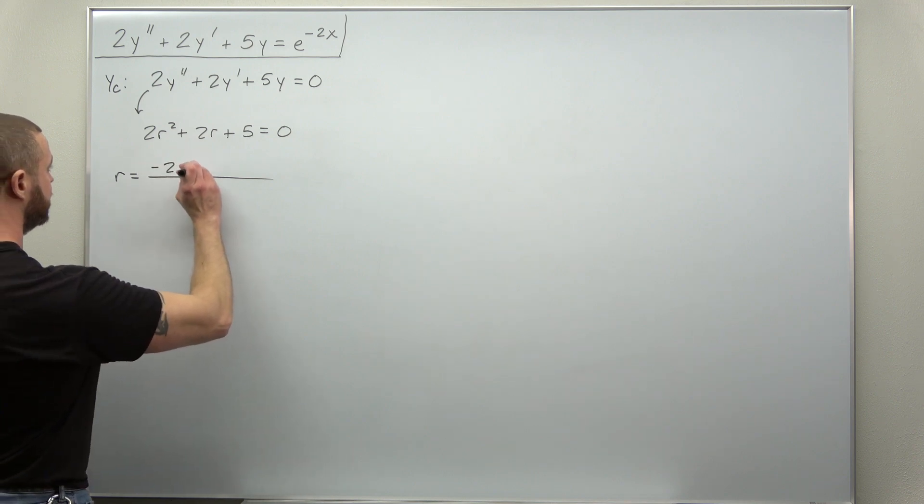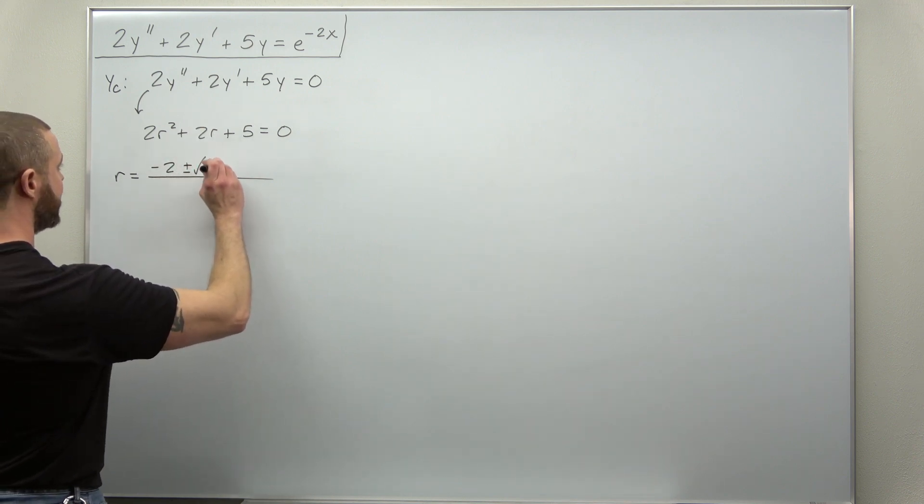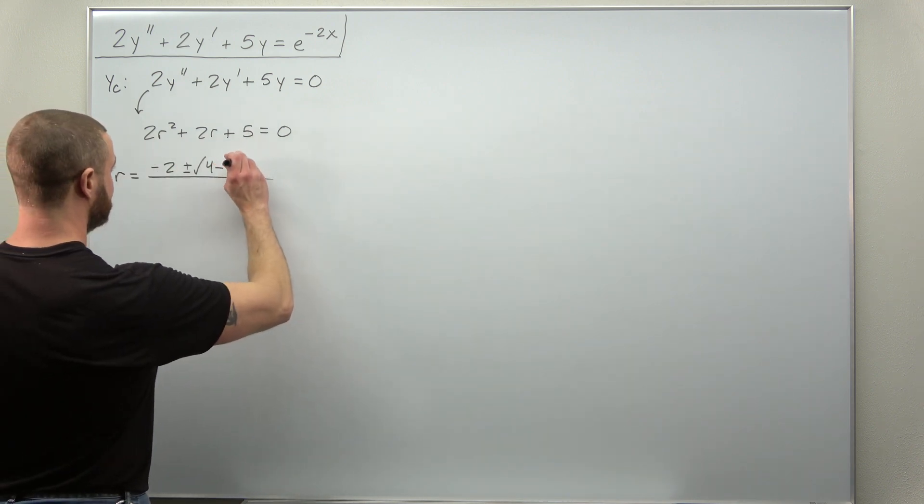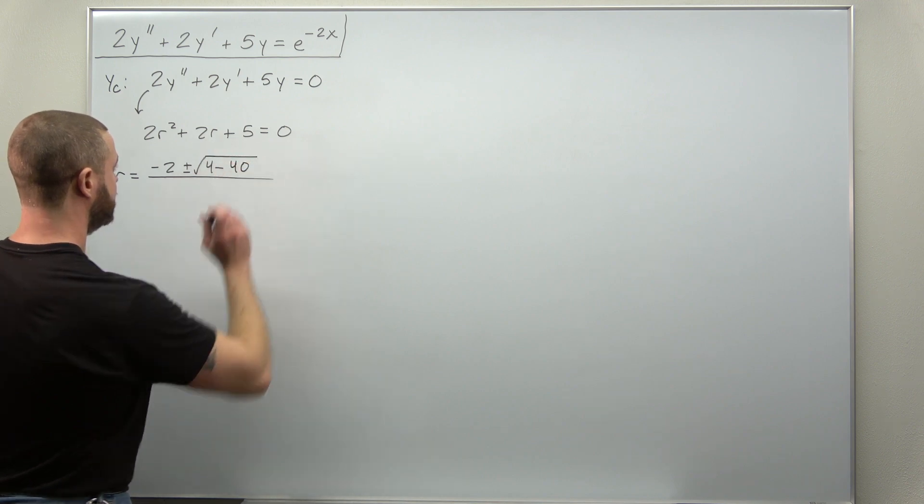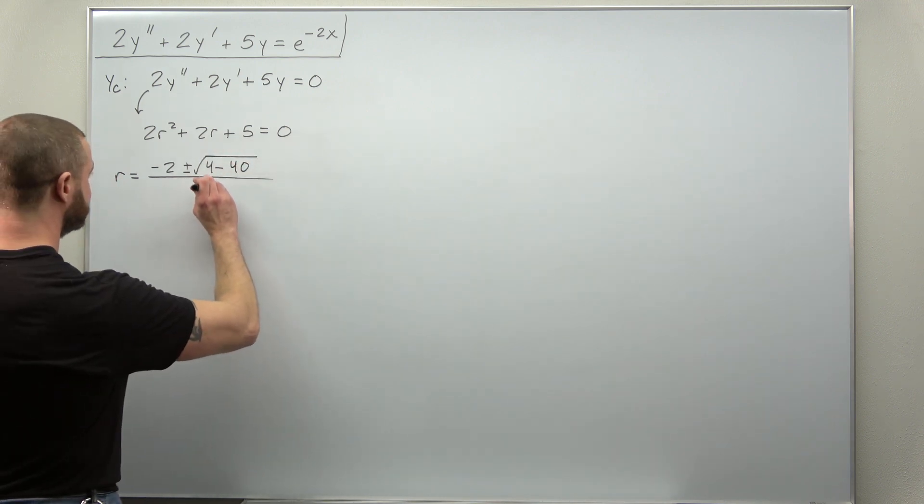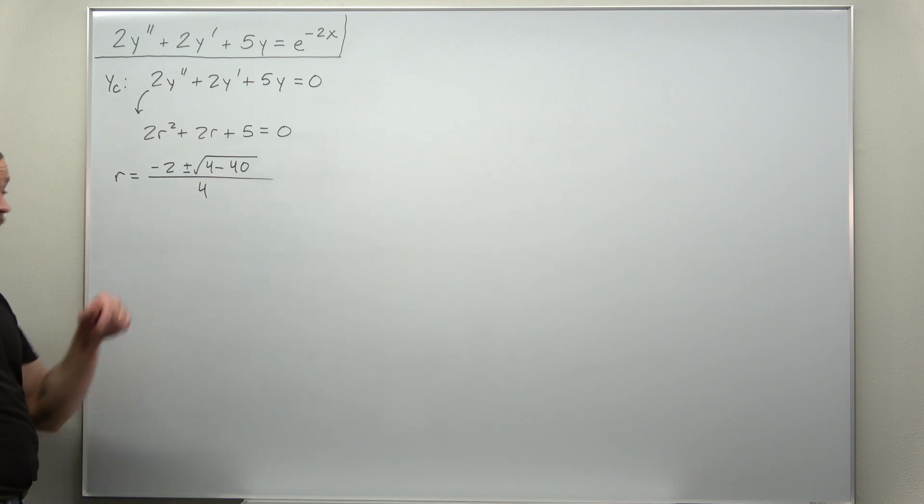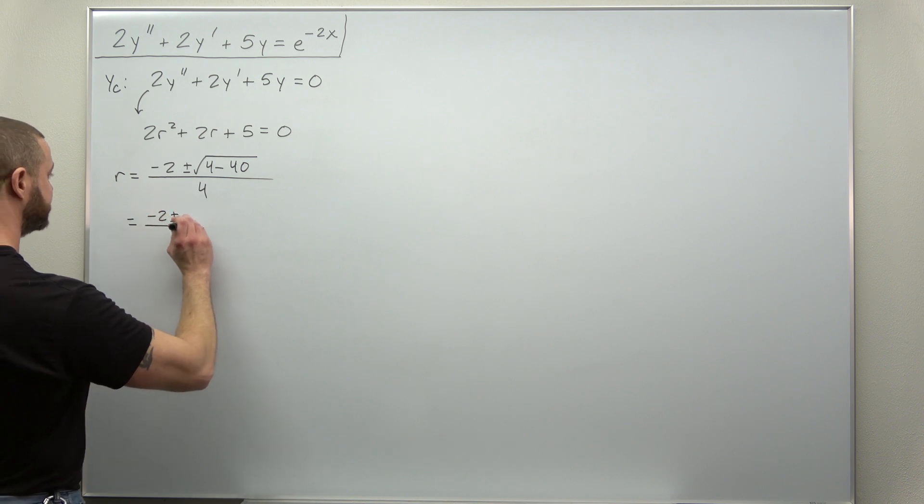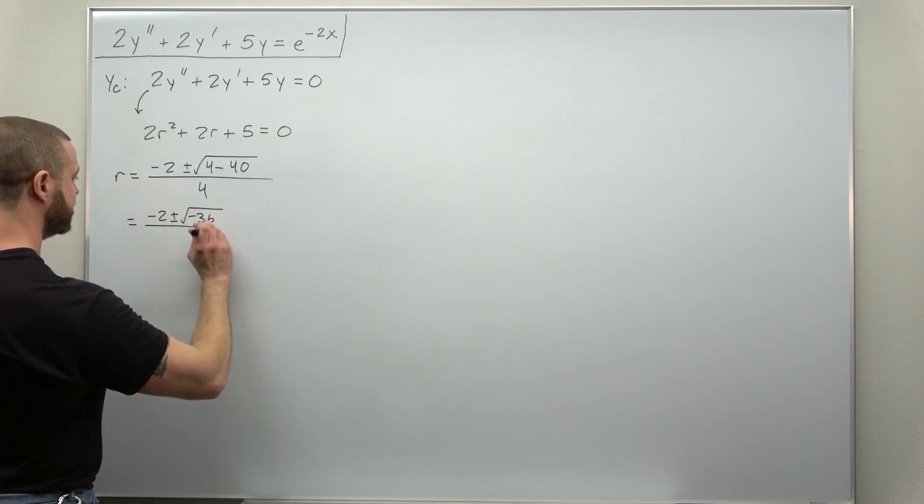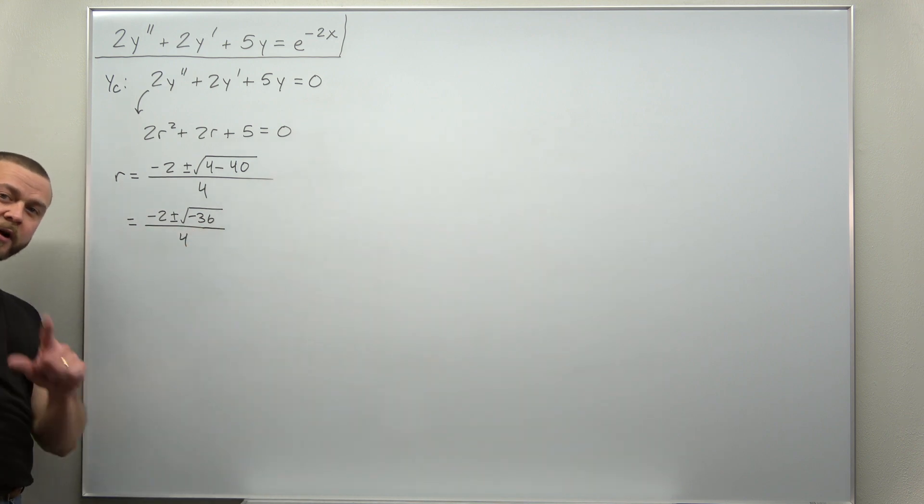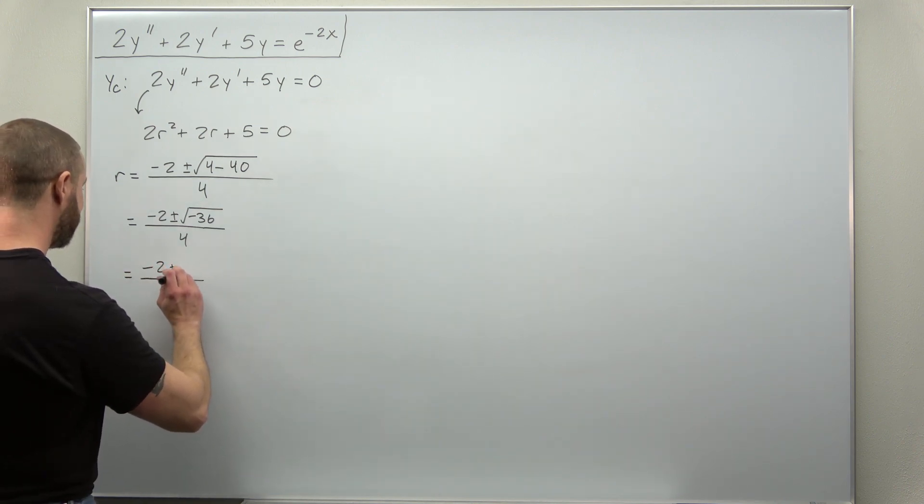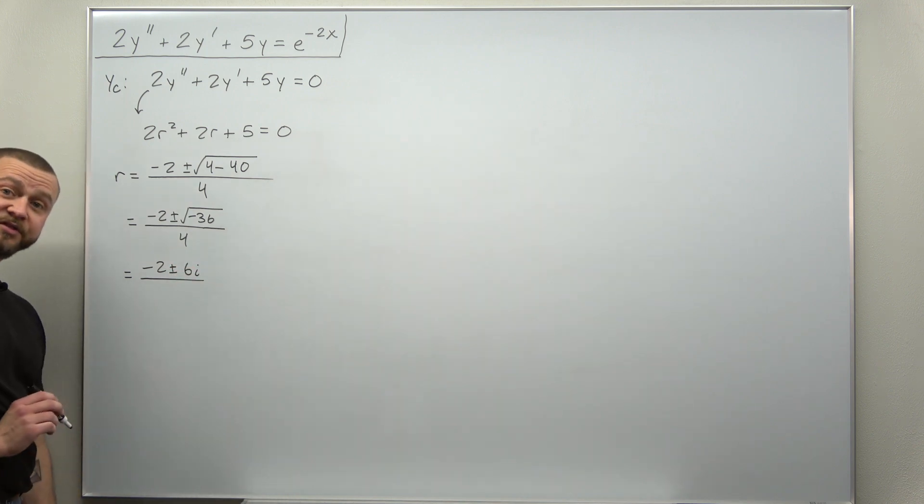We'll get negative b plus or minus b squared minus 4a. So that's 8 times another c. So we get 4 minus 40 and that's all over 2a. Looks like you can clean up the inside there as negative 2 plus or minus square root of negative 36. And we can see we're going to get complex values here. The square root of negative 36, we can write that as 6i.